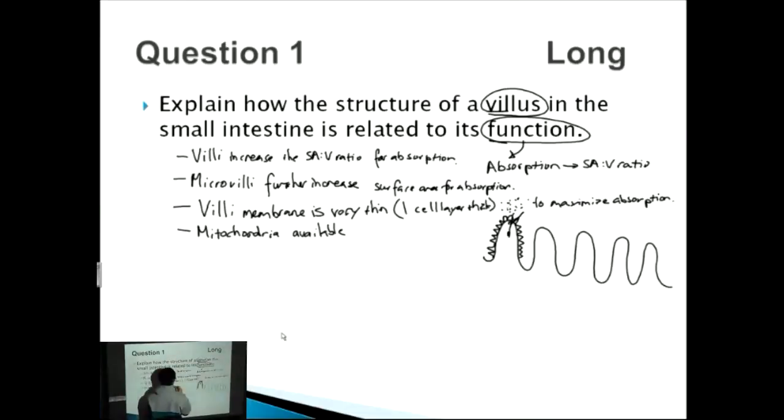Mitochondria in abundance for active transport. Good. So after you have the mitochondria there, another thing is that you've got the capillaries inside there as well as the lacteals inside there, which take away the carbohydrates and proteins for the capillaries, and the lacteal takes away the lipids respectively. So let's talk about those.